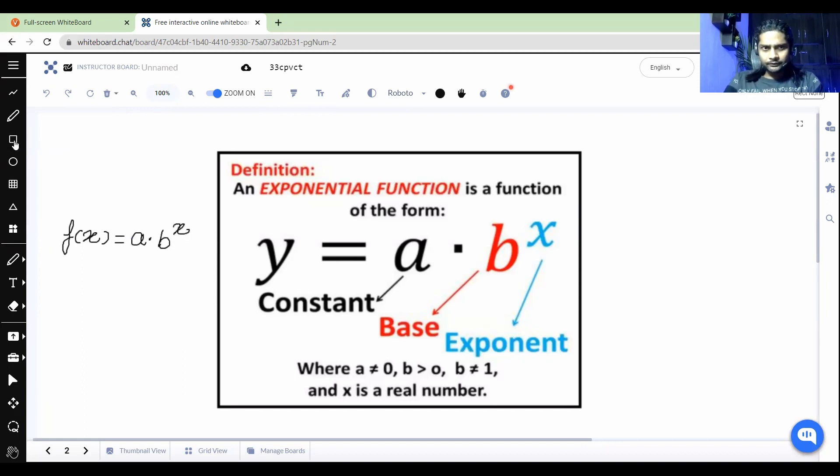There are a few points mentioned over here, students. That a cannot be equal to zero. What if? Why can't a be zero? Any idea, students? Why can't this a be equal to zero? Yes, Ian, please tell. Because I think if a is zero, then y will also be equal to zero, because you're multiplying b^x by zero. Exactly.